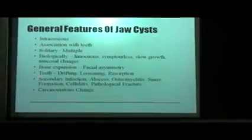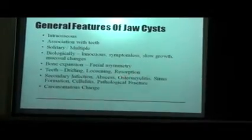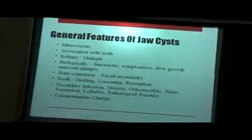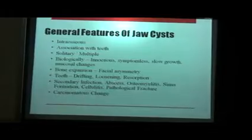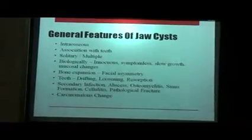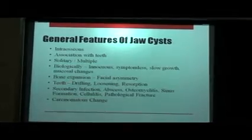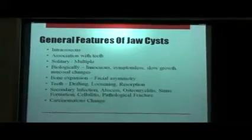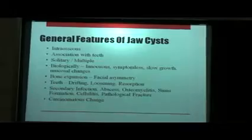For teeth, aggressive cysts such as odontogenic keratocyst can cause drifting, loosening and resorption. They can also undergo secondary infection which will lead to abscess formation or osteomyelitis, sinus formation, cellulitis or even pathological fractures. Some cysts can even undergo carcinomatous changes — for example, dentigerous cysts can transform into squamous cell carcinoma.